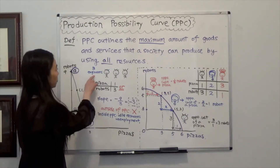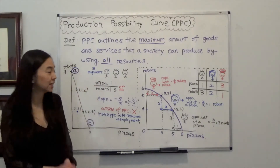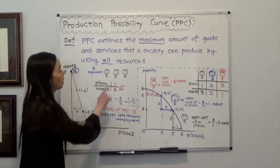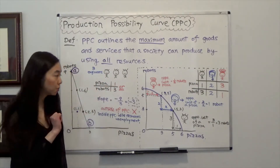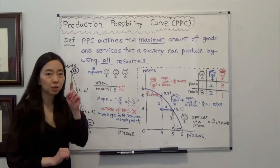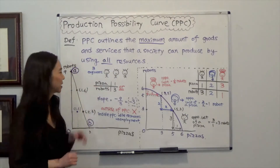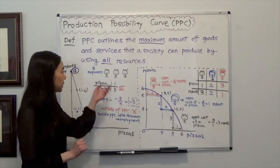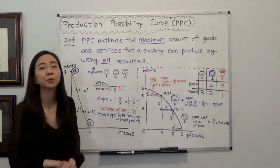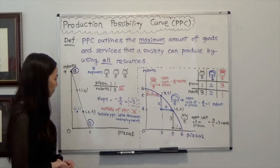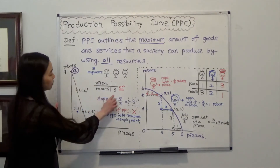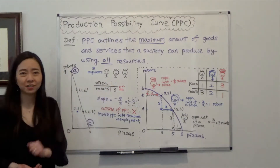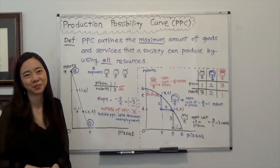We start the example with a society with the same kind of resource. We have three engineers in this society, and each engineer can produce either one pizza or three robots in one hour — not both. If the engineer is producing pizza, then the engineer cannot produce robots at that time. With that information and the three engineers, we are ready to sketch our Production Possibility Curve.